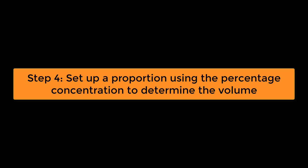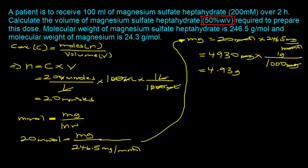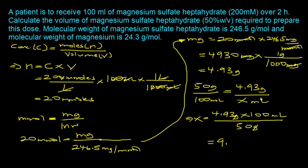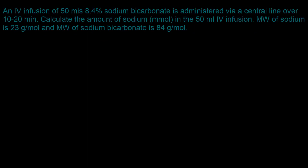Step four is to set up a proportion using the percentage concentration to find the volume. A 50% weight by volume concentration means 50 grams of magnesium sulfate heptahydrate in 100 milliliters of solution. We want to find the volume X that contains 4.93 grams. Solving: X equals 4.93 grams times 100 milliliters divided by 50 grams. The grams cancel out and we get 9.86 milliliters.